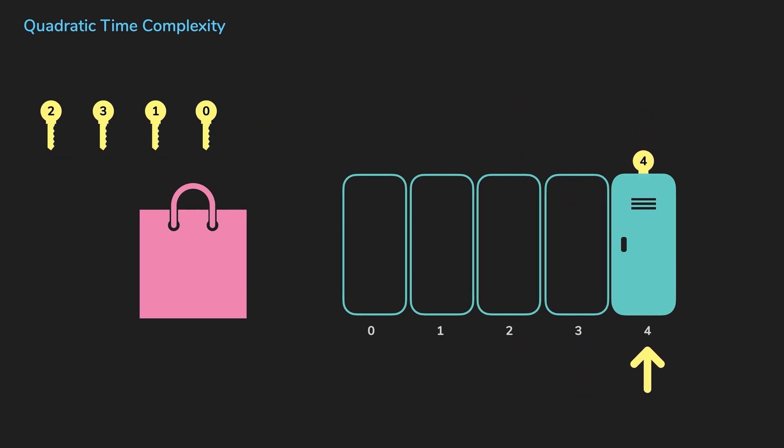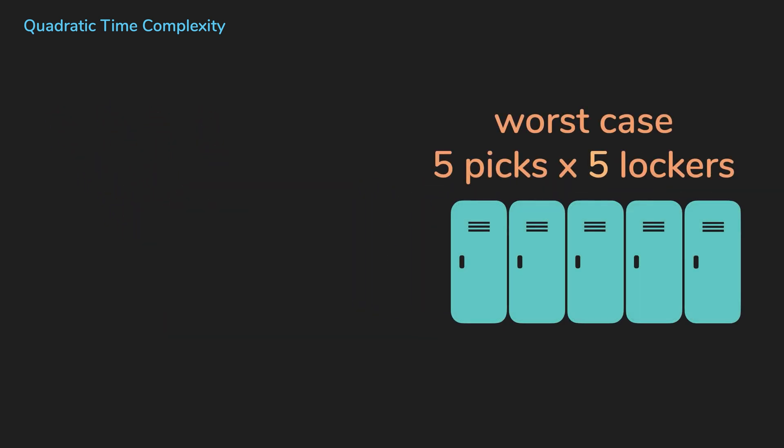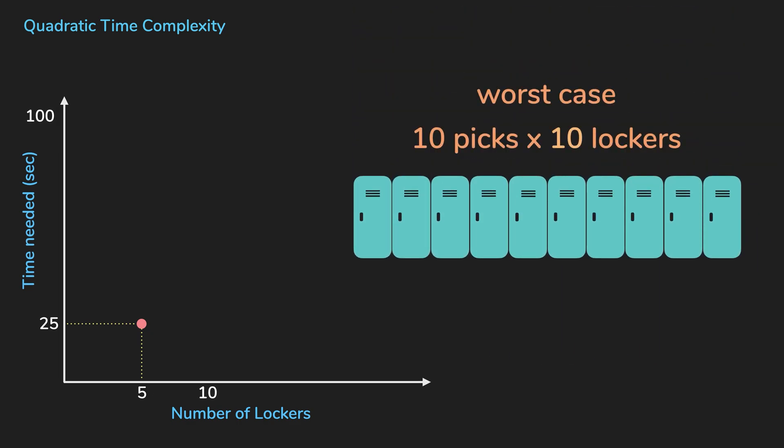When N equals five, in the worst case, you need to pick the keys five times for each locker. So in total, you would have to pick the keys 25 times. If picking a key takes one second, and we just assume that opening the locker doesn't take any time, it will take 25 seconds to find the book.